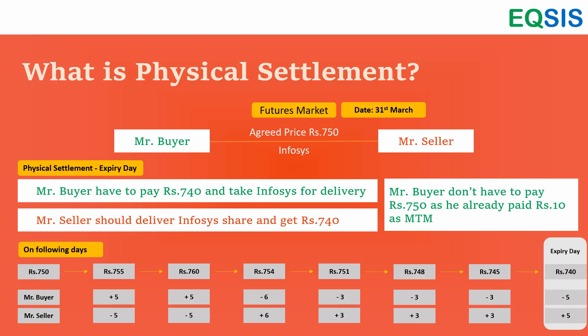Physical settlement is different. As per my commitment, on the last day I have to actually take the shares from you and you have to deliver shares to me. If I am holding a long position in futures, I have the right to buy and I have to take the shares by making a full payment. That is why margins spike ahead of expiry — the exchange keeps increasing margins in the last two or three days, so people tend to unwind positions even a week before, due to high margin pressure.